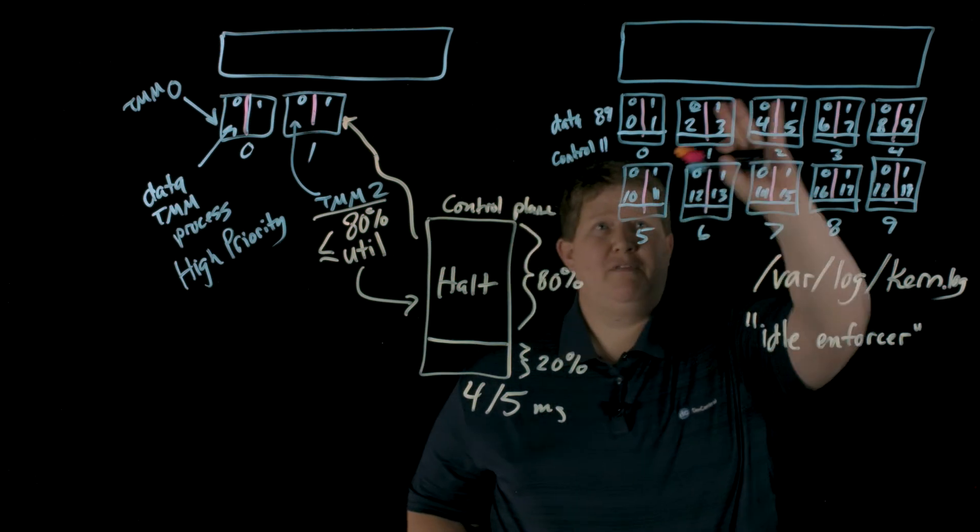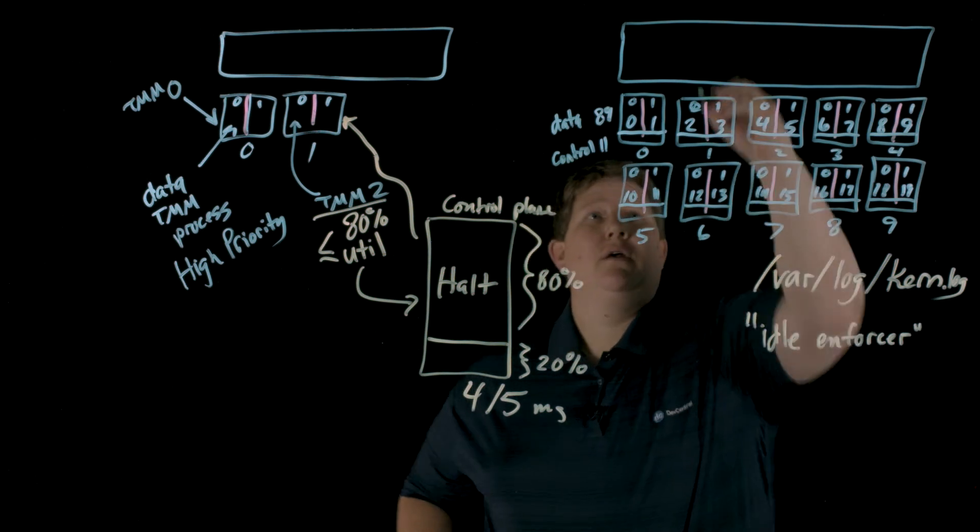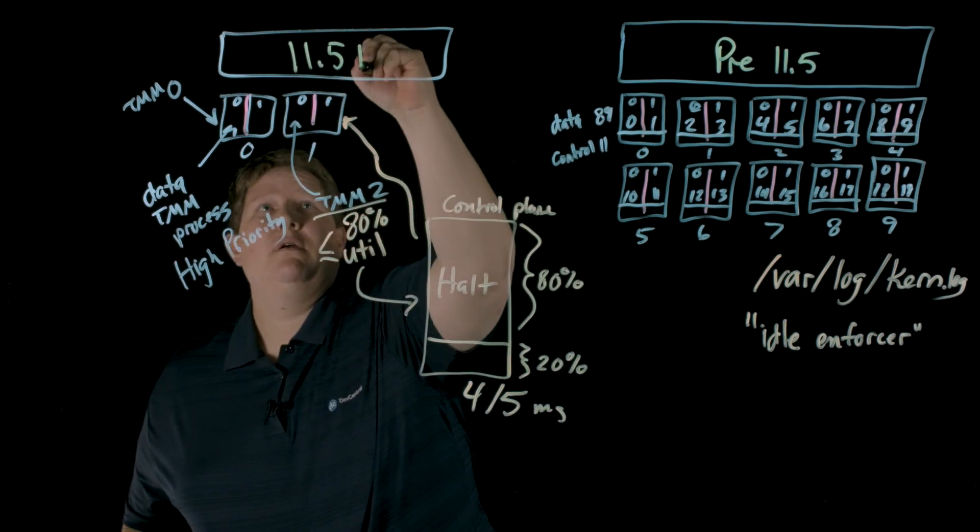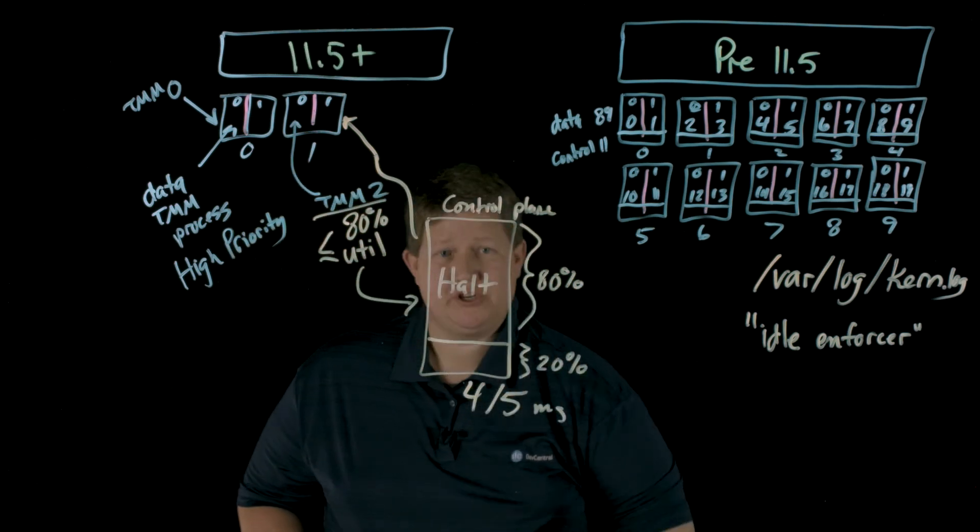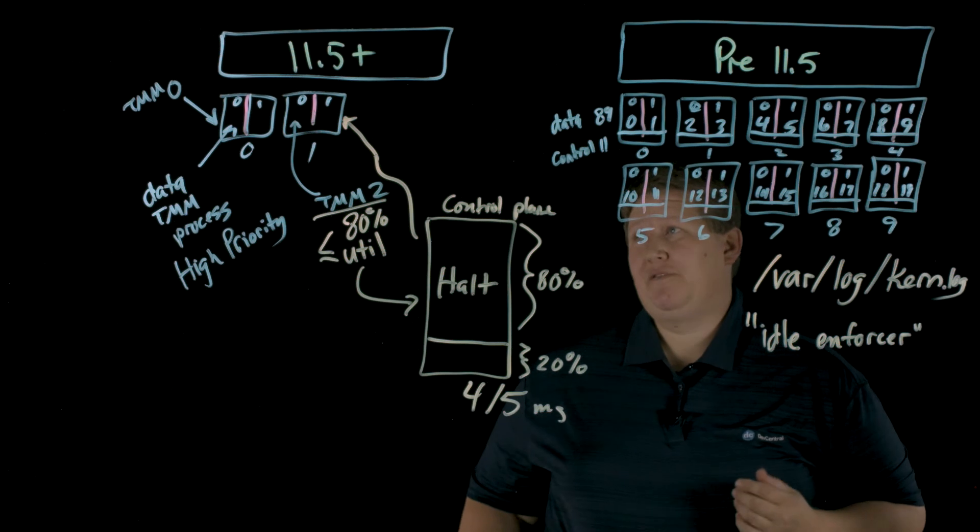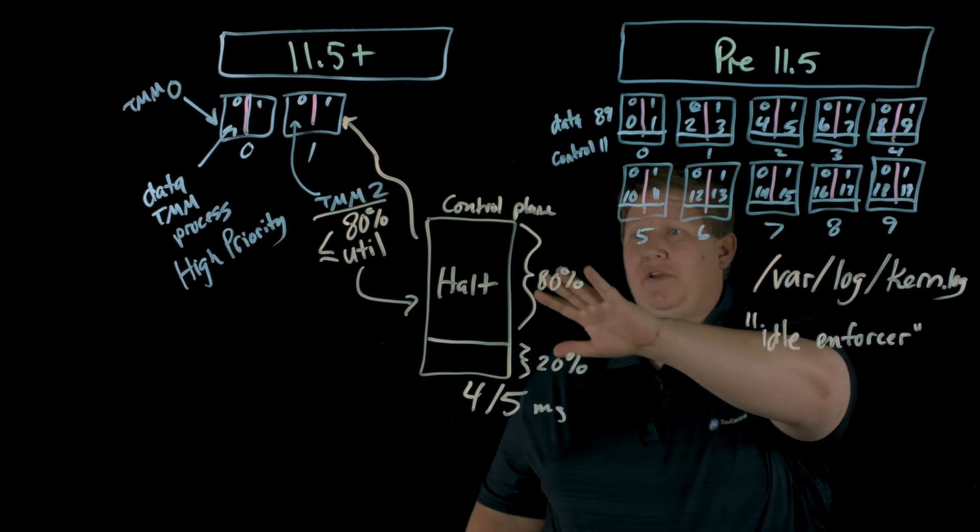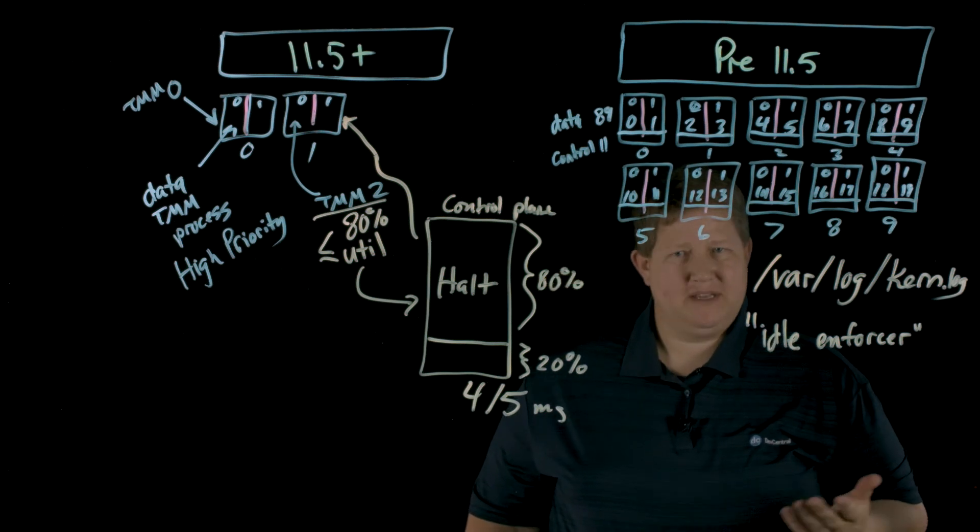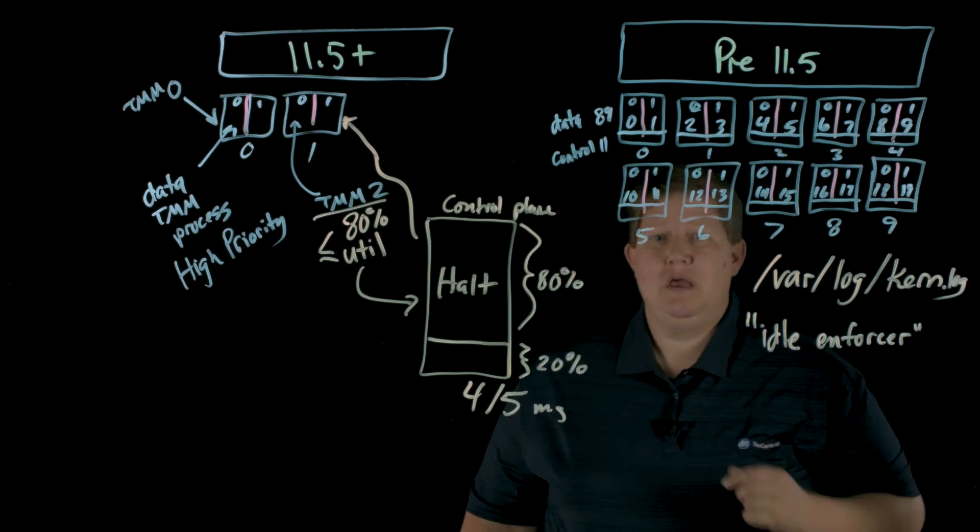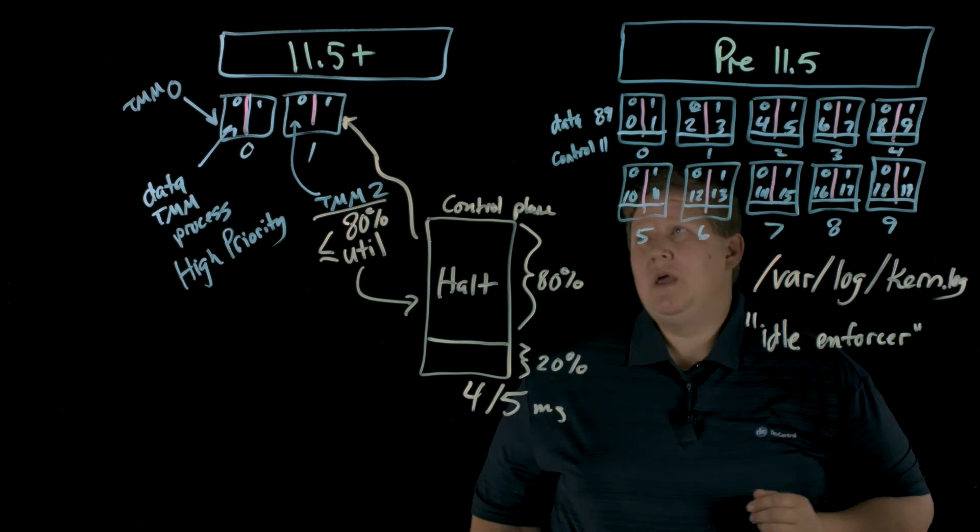So with this change from before 11.5, this is pre 11.5 and this is 11.5 and up. With those changes, what kind of impacts are we looking at? We have an improved data plane performance because we have priority established on the zero threads and we're going to halt the control plane if system utilization is high. We also have improved control plane responsiveness even when the system is heavily utilized, or especially when the system is heavily utilized.